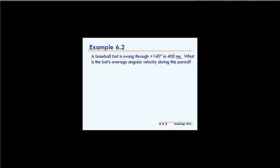This is example 6.2. It reads, a baseball bat is swung through positive 140 degrees in 400 milliseconds. What is the bat's average angular velocity during this period?